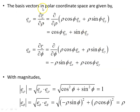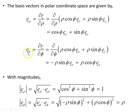The basis vectors in polar coordinate space are: e_rho is dr/d(rho) of the position vector, which when we differentiate gives us cos(phi) e_x + sin(phi) e_y. The basis vector in the phi direction, e_phi, is dr/d(phi), which gives us -rho sin(phi) e_x + rho cos(phi) e_y.